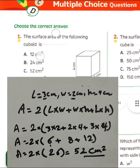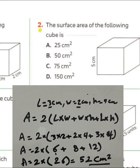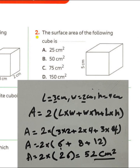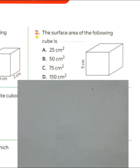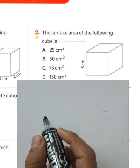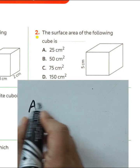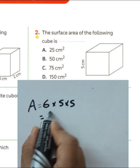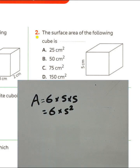Question number two: the surface area of the following cube is? We have a cube here. The difference between a cube and a cuboid is that in a cube all sides are equal. So the surface area of a cube equals 6 times side times side, or 6s².